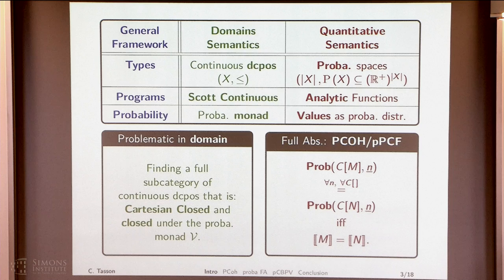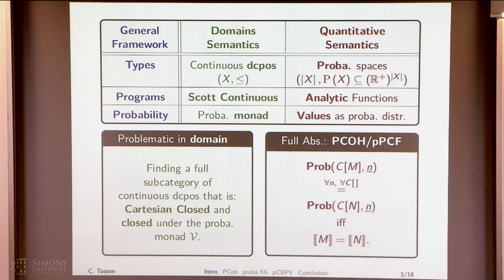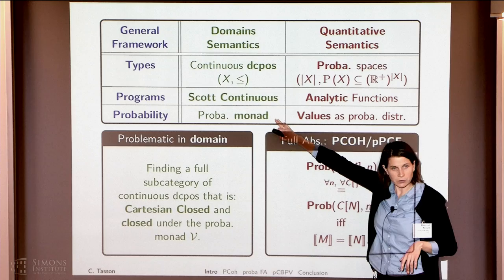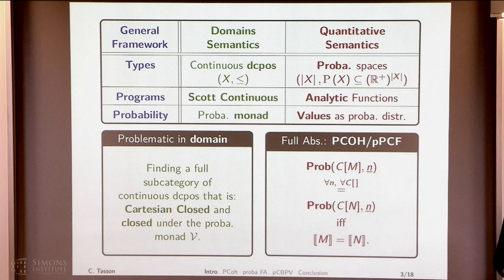In the quantitative semantics, thanks to the linear logic machinery, we do have a Cartesian closed category. We are able to interpret probabilities, but probabilistic spaces are domains. Analytic functions are Scott continuous, but we don't solve this problem because our category is not full — there are Scott continuous functions that are not analytic. Anyway, we still have a nice result: the full abstraction of this semantics with respect to a probabilistic extension of PCF, a pure functional programming language.